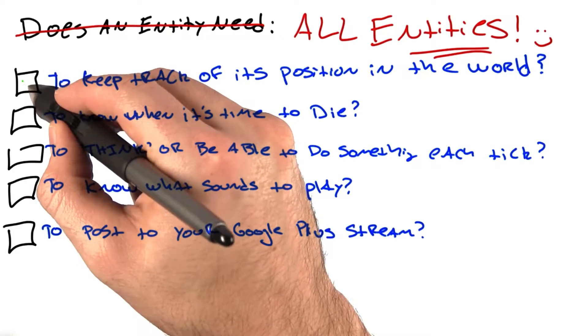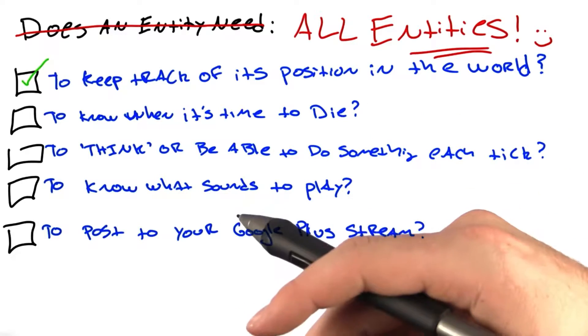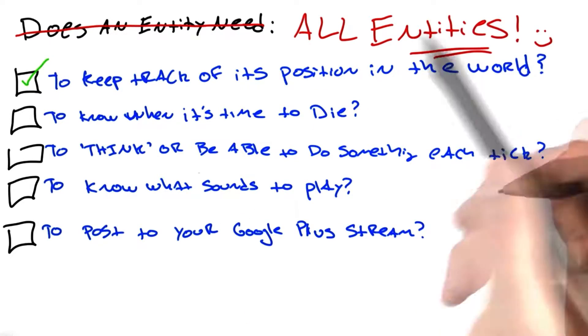First, to keep track of its position in the world. That's correct. All of our entities and grids need to know what position in the world they're at for a number of reasons, like physics, collision, and rendering.